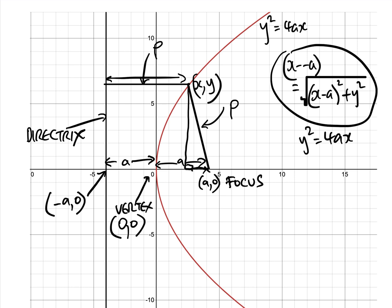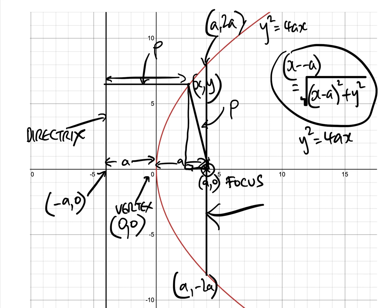We also need two other points. If we draw a chord from the focus, it hits the parabola at the point a, 2a and also at a, minus 2a. This line is called the latus rectum, which for some inexplicable reason causes quite a lot of titillation during maths lessons when it is first described. This is all you need to know about the basic parabola where the vertex is 0.